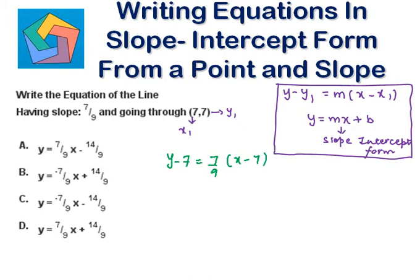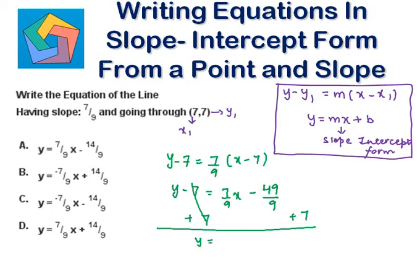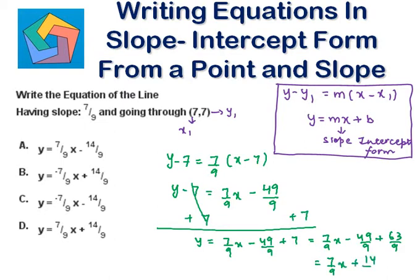Let's distribute 7 over 9 over the parentheses: y minus 7 is equal to 7/9x minus 49/9. Let's add 7 to both sides. We will get y equals 7/9x minus 49/9 plus 7. We can write 7 as 63/9, so it becomes 7/9x minus 49/9 plus 63/9. And 63 minus 49 is 14, so this is plus 14/9.